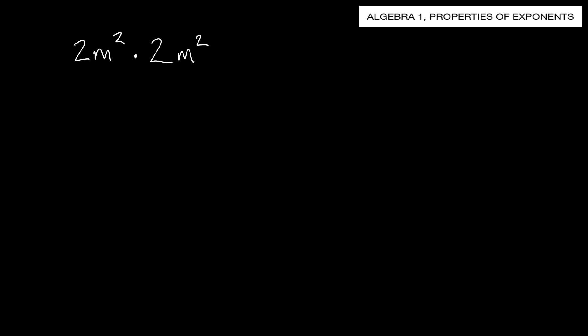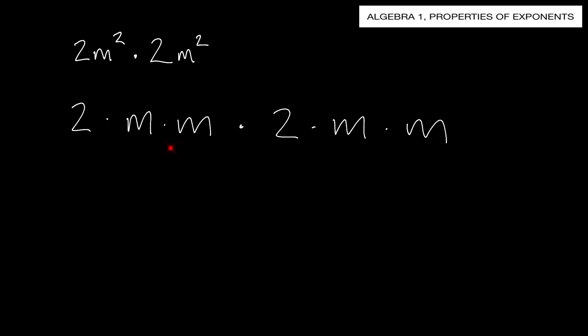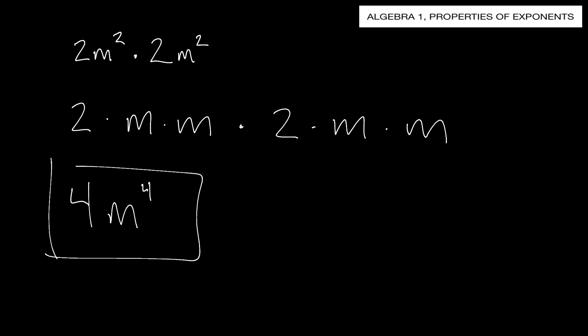We have 2m squared times 2m squared. What you can do is break this apart: 2 times m times m times 2 times m times m. Here's your m squared - I'm simply breaking it apart. Now gather everything together: 2 times 2 gives us 4, then m times m times m times m, that's going to be m to the fourth power. So our answer is 4m to the fourth power.